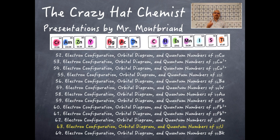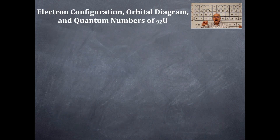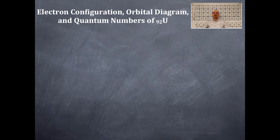Welcome to the Crazy Hat Chemist. Today we're doing another video in atomic structure and electron configuration. So let's get started. We're going to cover electron configuration, orbital box diagram, and quantum numbers for Uranium-92.